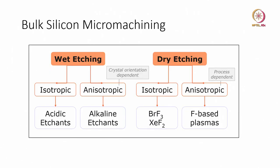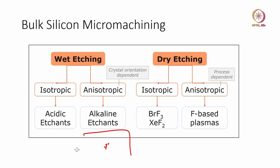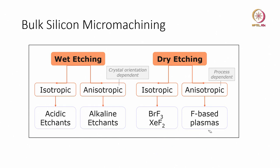Bulk micromachining can be divided into dry and wet etching, both having isotropic and anisotropic processes. In wet etching, the anisotropic process is crystal orientation dependent — for example, silicon etched with KOH produces a 54.7° angle because the (111) plane etches differently from the (100) plane. In dry etching, the process is not crystal-orientation dependent but process-dependent, so you always get vertical sidewalls. Plasma-based dry etching techniques include fluorine-based and chlorine-based etching.